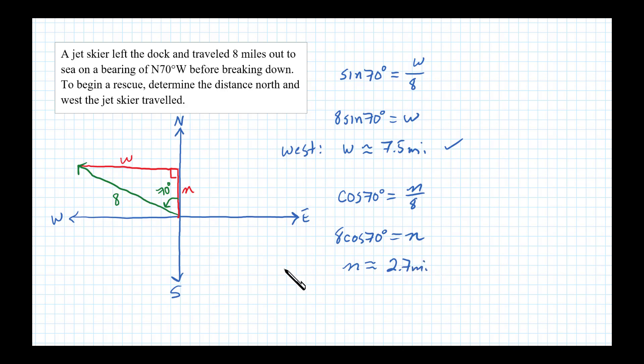And that's the distance the jet skier traveled north. So the distance traveled west is 7.5 miles, and the distance traveled north was 2.7 miles.